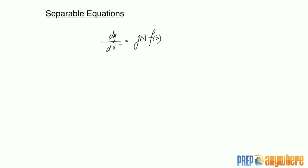But if the differential equation is of this form, it has a name — it's called a first-order differential equation. The derivative is equal to g, a function of x, times f, a function of y.